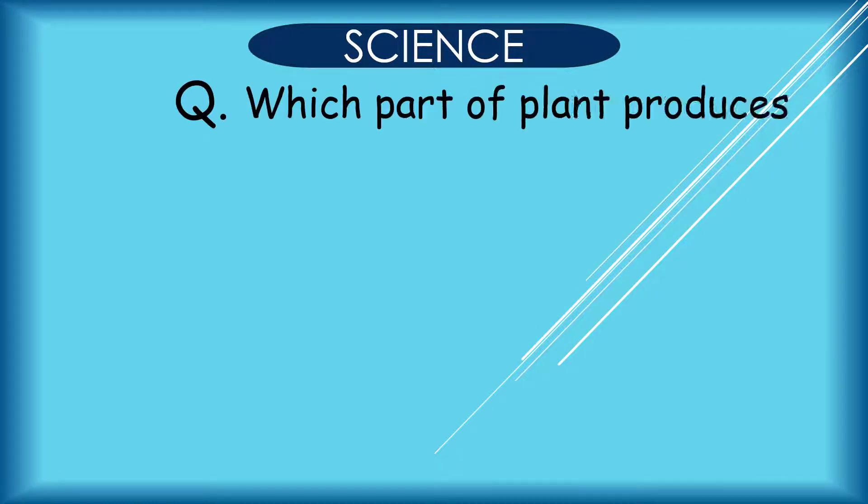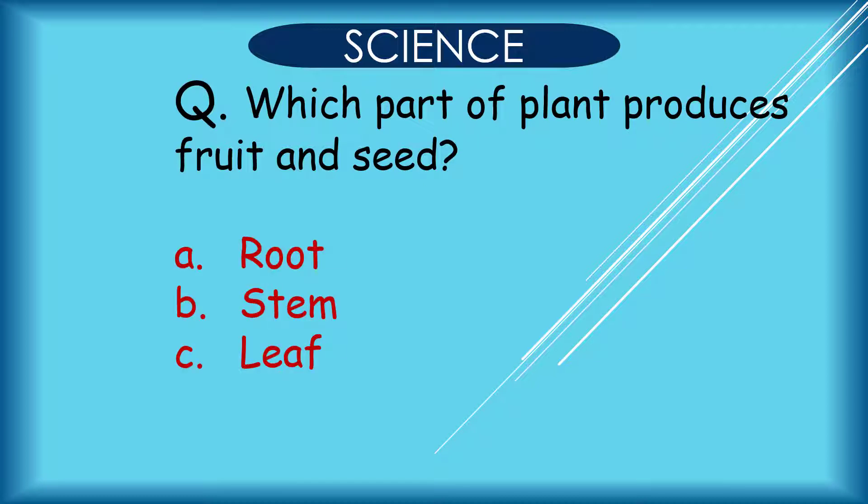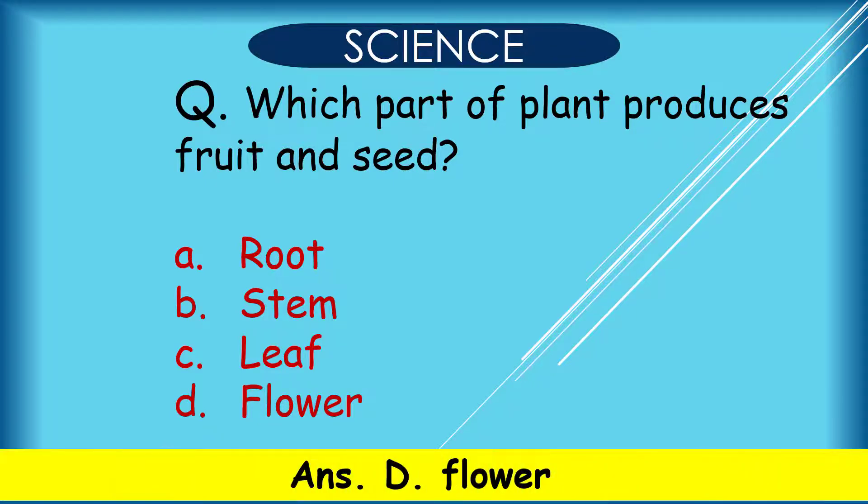Question: Which part of plant produces fruit and seed? A. Root, B. Stem, C. Leave, D. Flower. Correct answer is D. Flower.